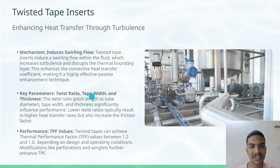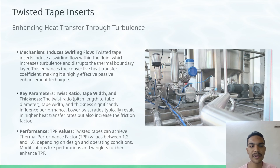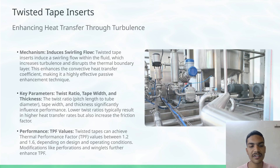Some key parameters in this are Twist Ratio, Tape Width, and Thickness. Lower twist ratios typically result in high heat transfer rates but also increase the friction factor. Coming to its Thermal Performance Factor (TPF) value,